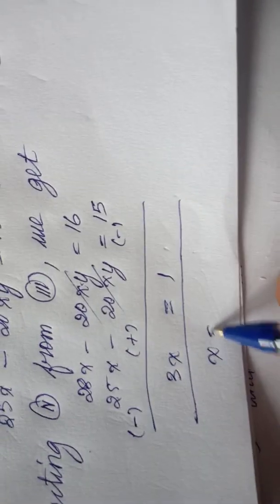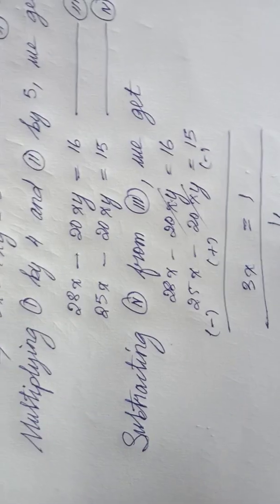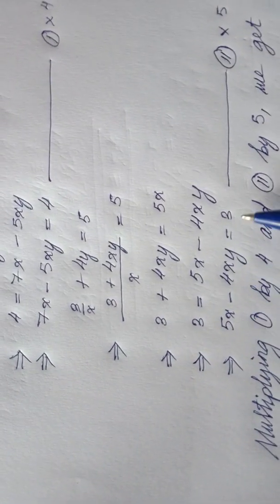Therefore x = 1/3. Now that I have the value of x, I will substitute it into equation 2 since it has smaller numbers and is simpler. Substituting x = 1/3 into equation 2: 5x − 4xy = 3.